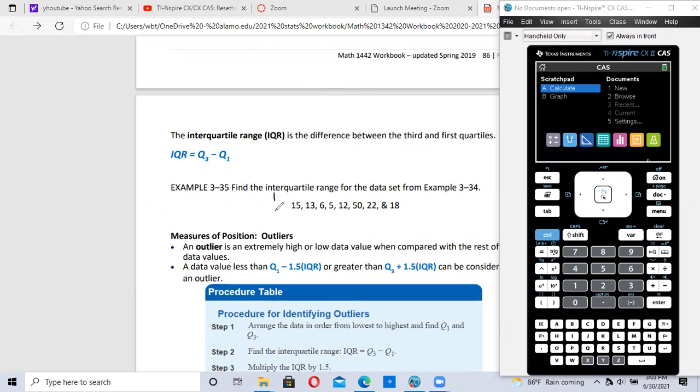I'm going to find the five-number summary from this data. Five-number summary is the minimum piece of data, quartile one, the median, quartile three, and the maximum piece of data.